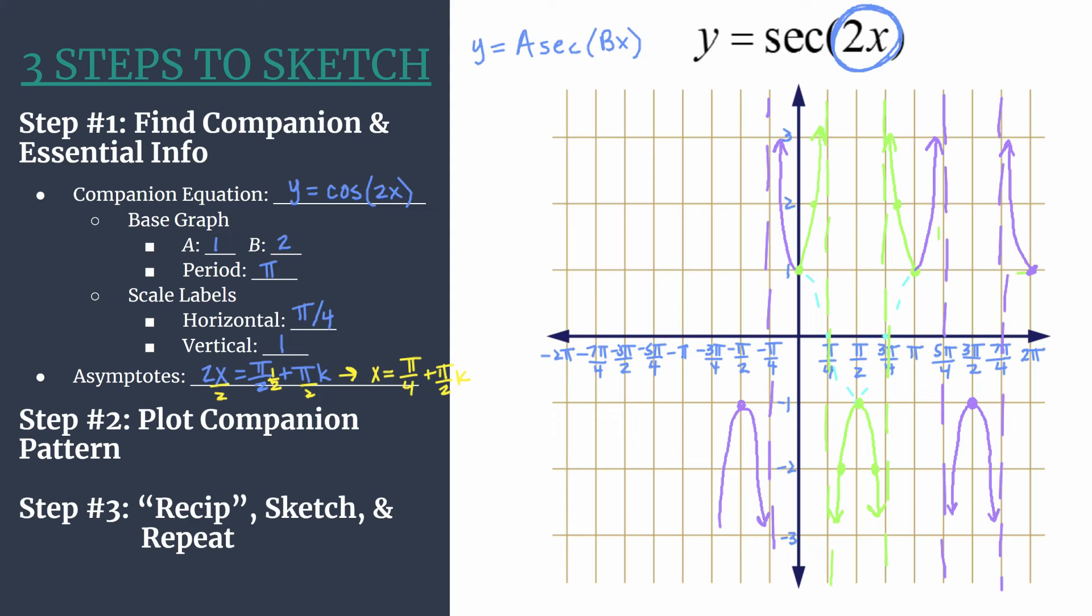We'll have a secant curve here. And notice how you're really just plotting those key points. It's one key point, asymptote. Another key point, asymptote. So it's the maximums and minimums from the original companion cosine equation are turning into these relative maximums and relative minimums of a secant graph.